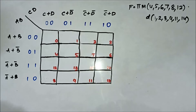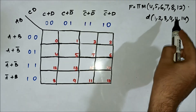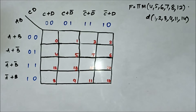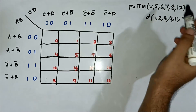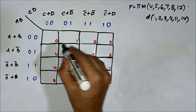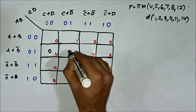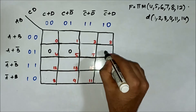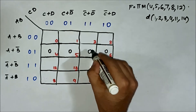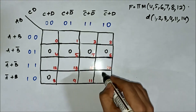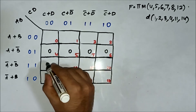Here is another question on the 4-variable don't care condition POS K-map. We have the max term values and the don't care values. We map them first. The max term values are 4, 5, 6, 7, 8, and 12.